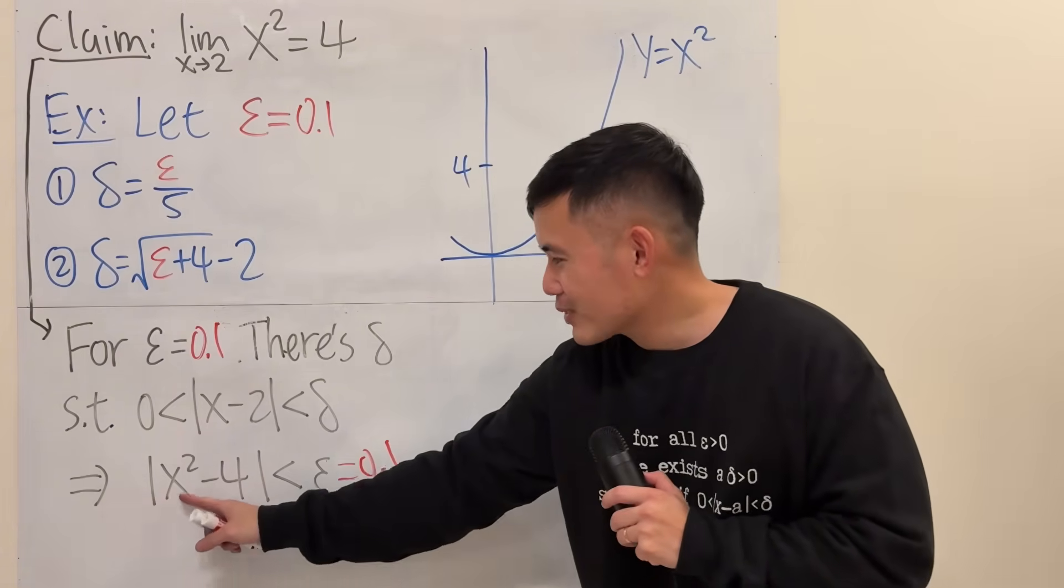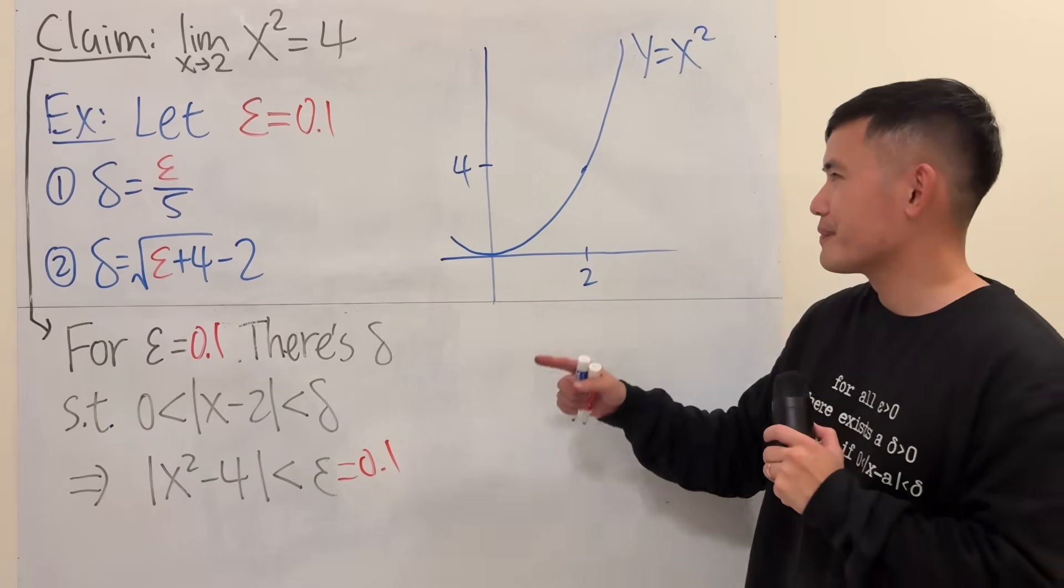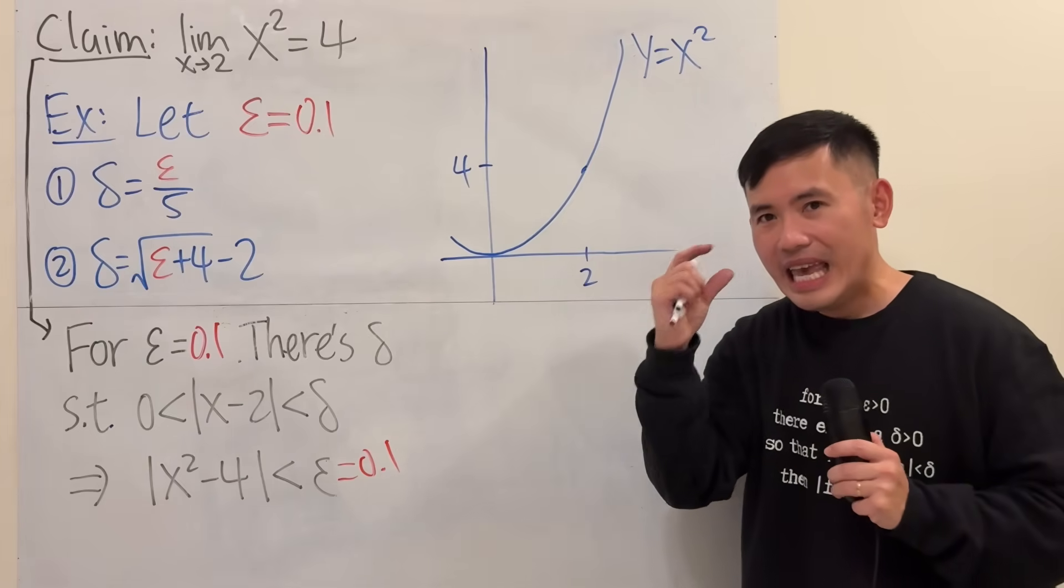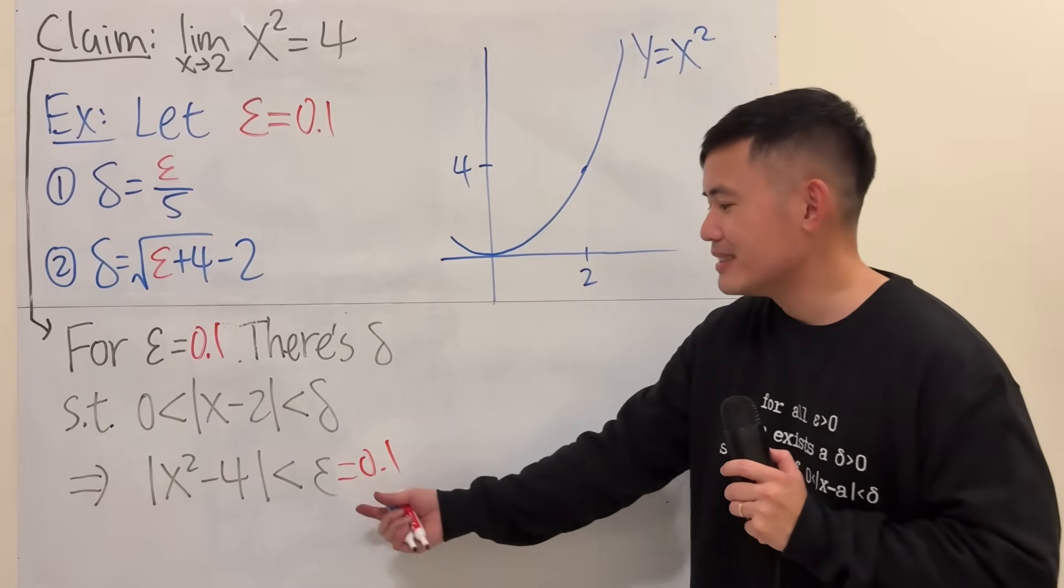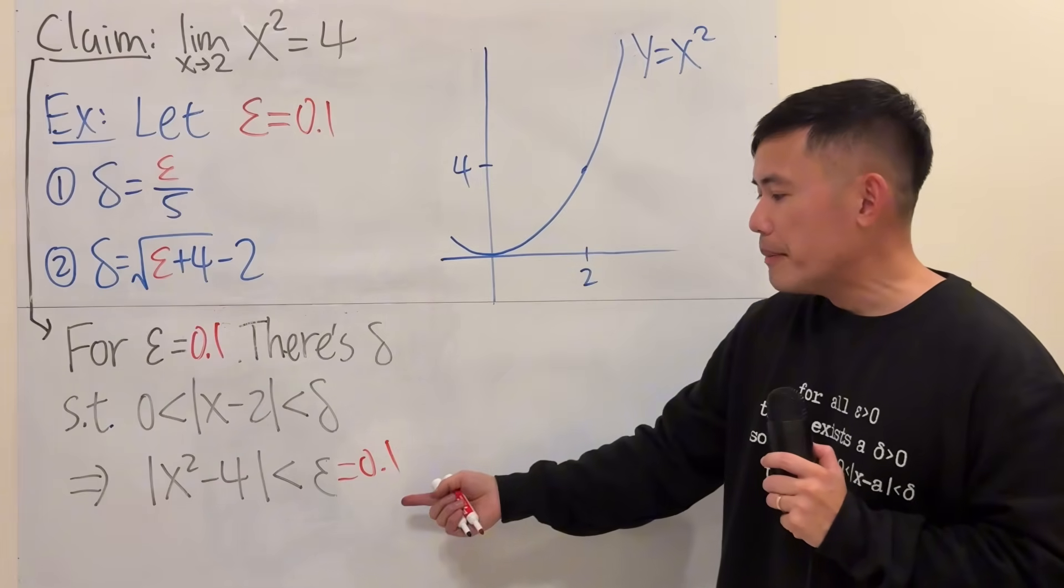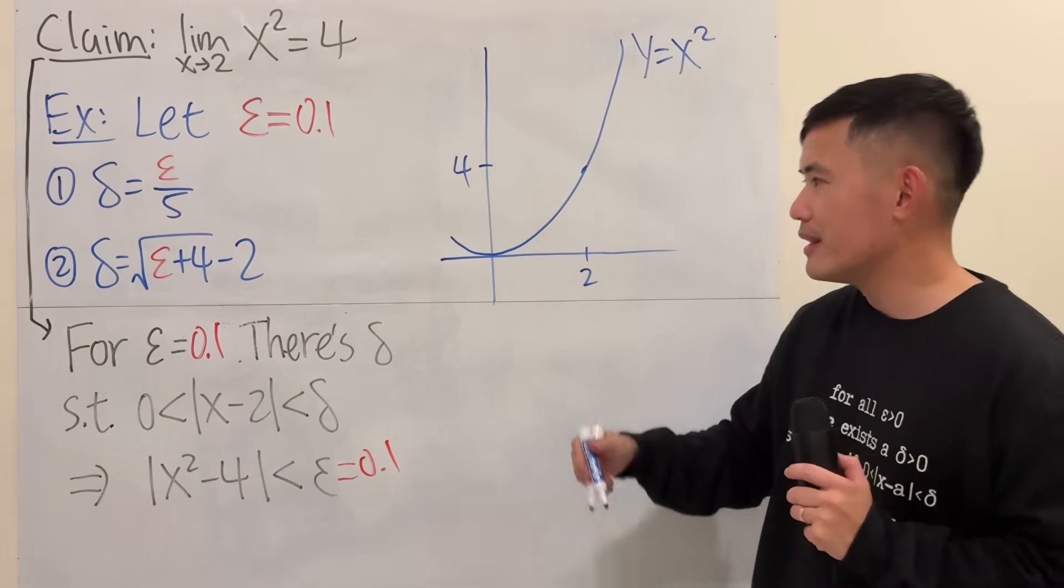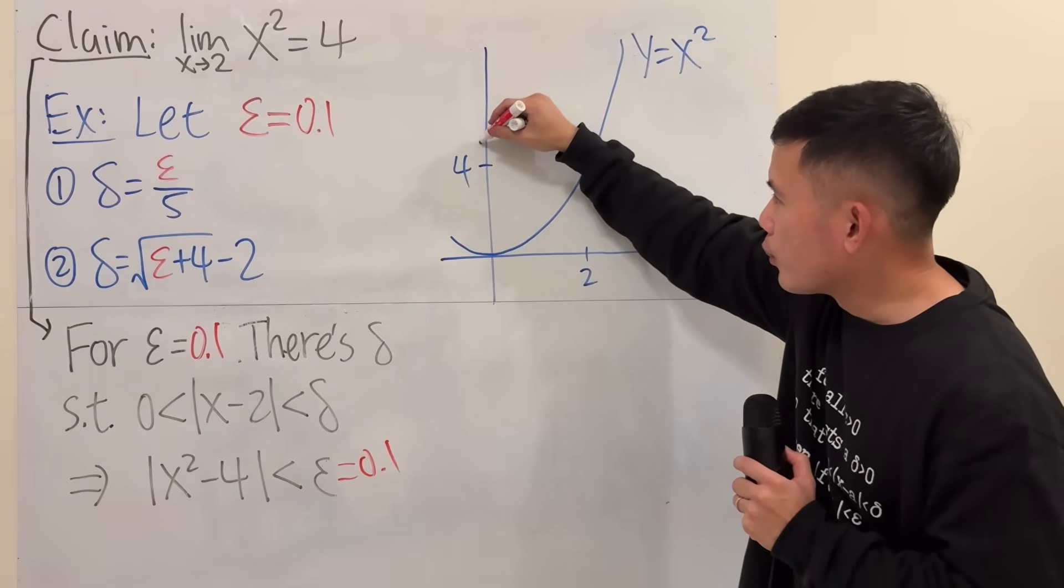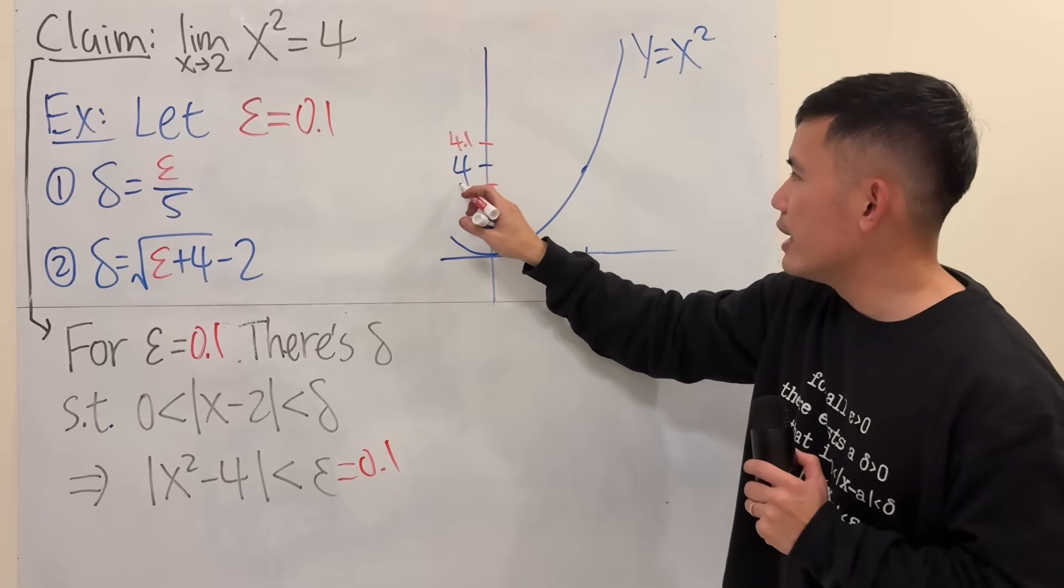Now, what does this mean though? |x²-4| is less than 0.1. Well, this is the error that you are allowed to make. Well, that's why we have the e, or the epsilon, on the y. So, that means you can go up 0.1, and you can also go down 0.1. So, if you go up 0.1, you will have 4.1. If you go down, you get 3.9.